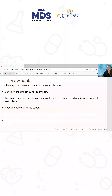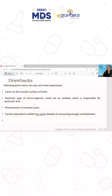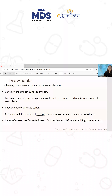The third drawback was the phenomenon of arrested caries. Certain populations exhibit less caries despite consuming enough carbohydrates. They were not able to explain why certain populations showed less caries even while consuming enough carbohydrate. Also, caries of unerupted or impacted teeth could not be explained.